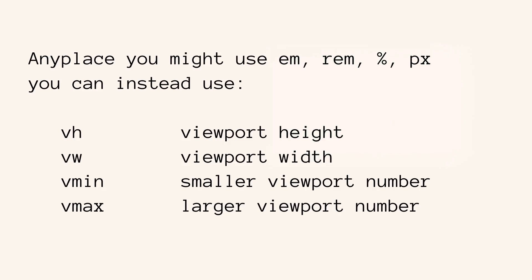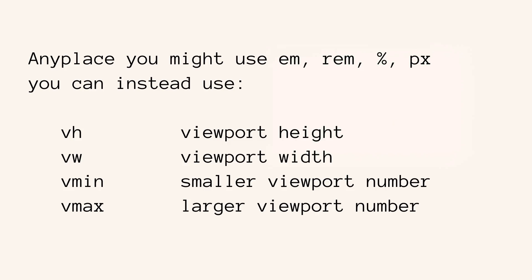Basically, any place that you might use an em, a rem, a percent, or a pixel, instead you could use a VH unit (viewport height), a VW unit (viewport width), Vmin, or Vmax. Vmin will look at the two dimensions and pick the smaller of the two, and Vmax will look at the two dimensions and pick the larger of the two.